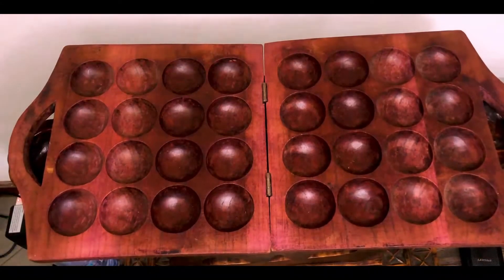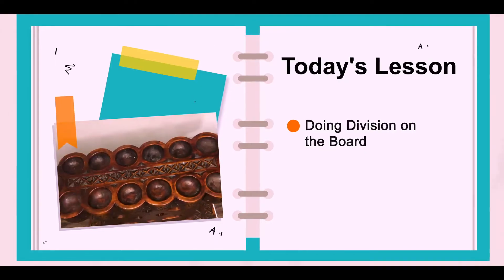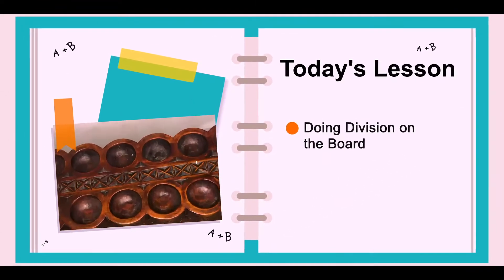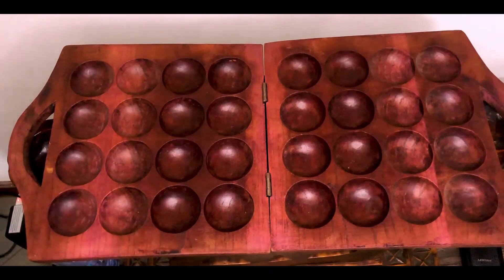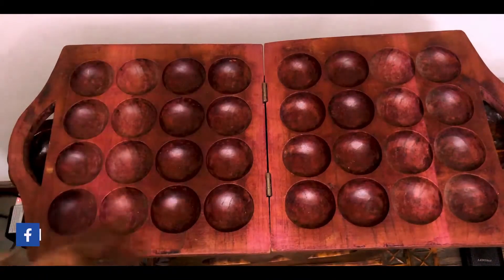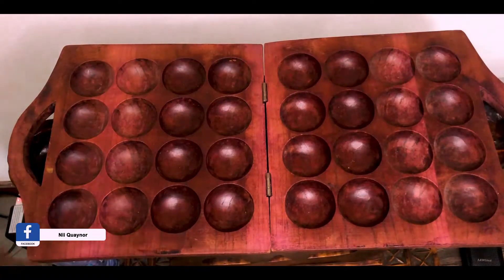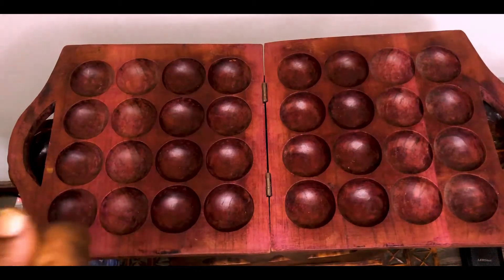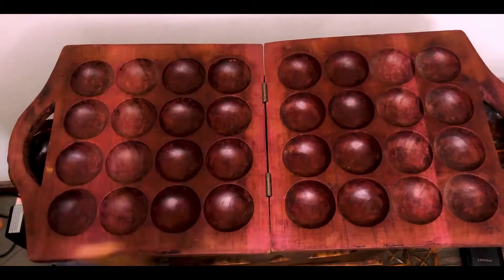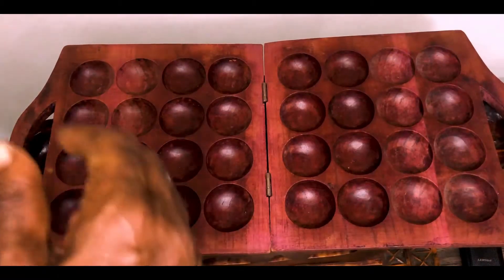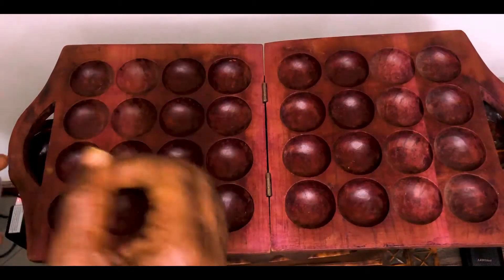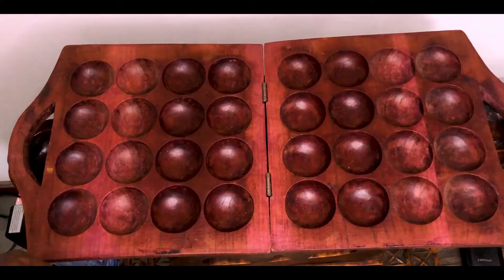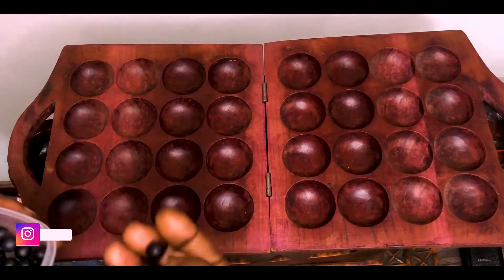Welcome to our calculus lesson. In this lesson I'm going to introduce you to how you do division. Notice that we're using the extended board, which is a combination of two adders — one adder at the top two rows and a second adder below. If you want to divide A by B, you want to get a quotient and a remainder. You get the quotient by counting the number of times you successfully subtracted B from A.